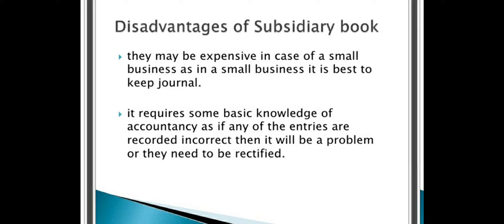Not only the advantages, there are also some disadvantages to maintaining subsidiary books. The first one is they may be expensive — in the case of a small business concern, it is best to keep a journal only. There are many business organizations running in the economy, and for smaller ones, categorizing transactions and maintaining separate books for separate purposes will become a cost. The second disadvantage is that it requires some basic knowledge of accountancy. To maintain a separate set of books as subsidiary books, the person has to categorize and identify which transaction goes in which book — all this kind of extra knowledge is required.